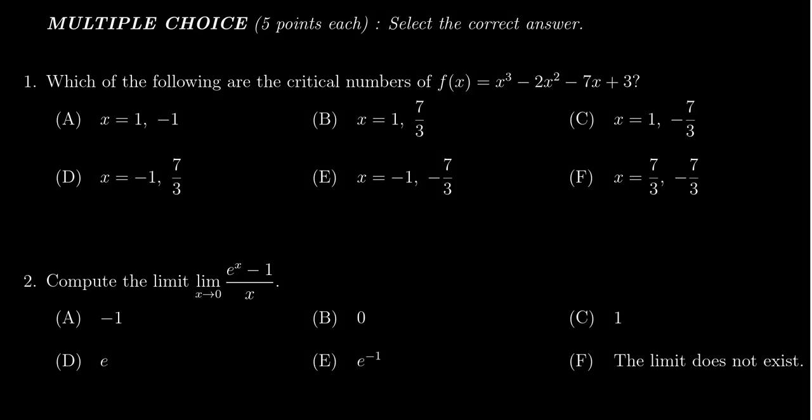equals x cubed minus 2x squared minus 7x plus 3. Now remember, the critical numbers are exactly those numbers which make the first derivative equal to zero or make the first derivative not exist.